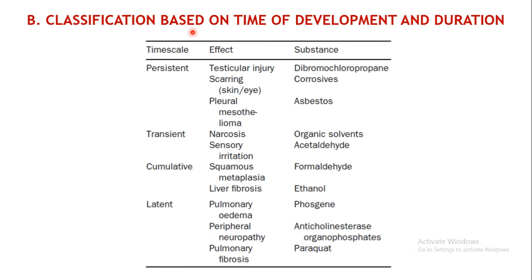The next type of classification is based on the time of development and duration — that is, after how long the toxicity is developed and for what time it lasts. For example, once a person is exposed to a toxicant, it may not immediately start producing effects — it may take some time, or the effects may last for a particular period. Based on these criteria — time of development and duration — toxicity can again be classified.